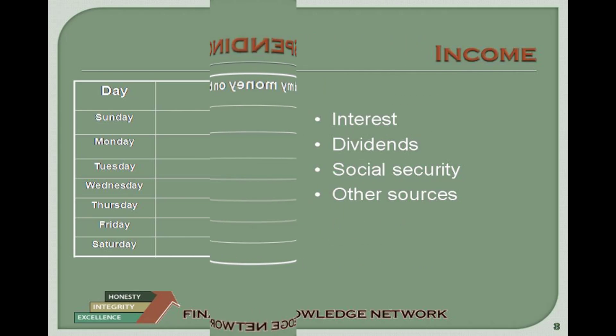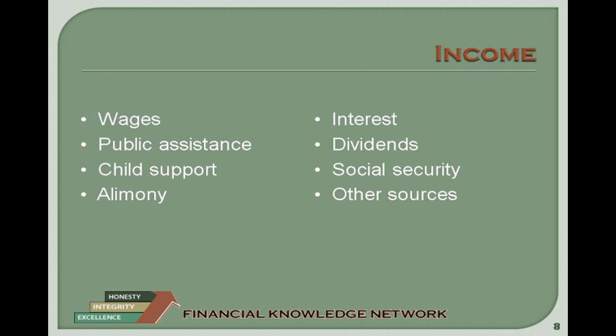Tax Credits That May Increase Your Income. Earned Income Tax Credit (EITC). The EITC is a refundable federal income tax credit for people who work but do not earn high incomes. If you qualify, the EITC reduces the amount of tax you owe, and it may give you a refund. You may even be eligible for an advance EITC, which allows you to receive part of the credit in each paycheck during the year. You file Form W-5 with your employer to get the advance EITC. Eligibility requirements include: you must have a valid Social Security number, and you must be between 25 and 65 years of age unless you have a qualifying child. A qualifying child must live with you in the United States more than half of the year.